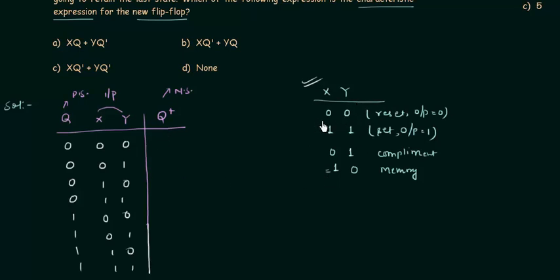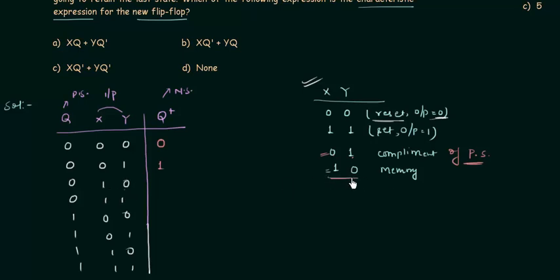When both x and y are 0, the flip-flop resets so q+ = 0. When x is 0 and y is 1, the next state is the complement of the present state — present state is 0, so q+ = 1. When x is 1 and y is 0, we have memory, so q+ = 0 (same as present state). When both x and y are 1, it is the set condition so q+ = 1.